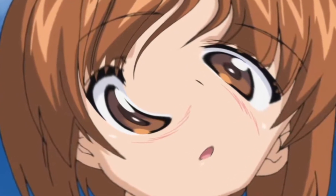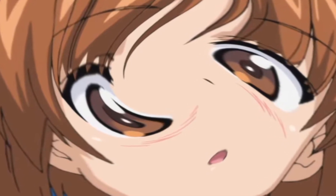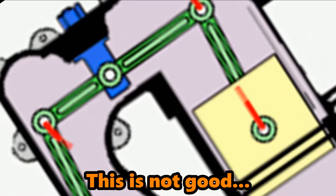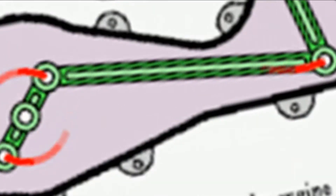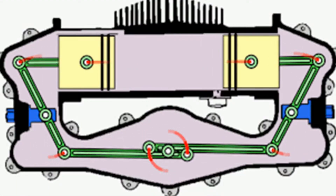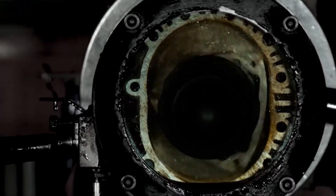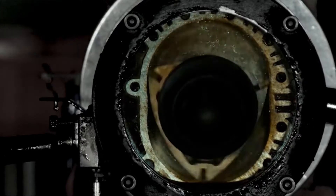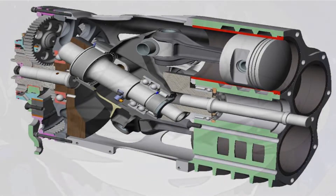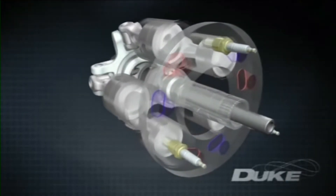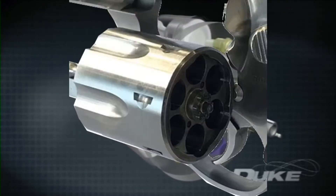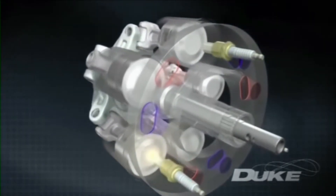Now we start to get into some of the less conventional engine configurations. Opposed piston engines are a type of engine that have two cylinders sharing a single combustion chamber, and there are other ways to mirror this configuration into an even larger and more impractical design. For Wankel rotary engines, the configuration is simply determined by how many rotors there are. Then there's the Duke engine — basically, someone looked at a revolver and decided to make it into an engine, and that's how the Duke engine was created.